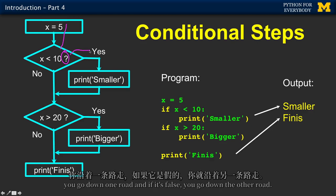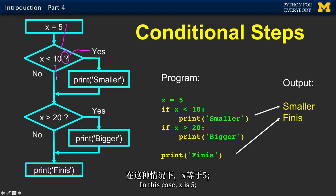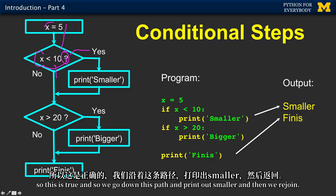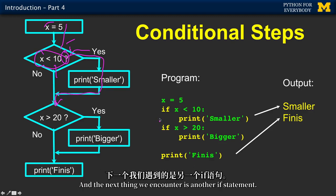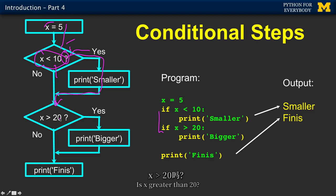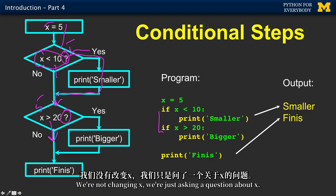You start with x equals 5, then you hit the if statement, and the if statement is asking a question. If the question is true, you go down one road, and if it's false, you go down the other road. In this case, x is 5, so this is true, and we go down this path and print out smaller, and then we rejoin. The next thing we encounter is another if statement. Is x greater than 20? Well, in that case, it's no, because x is 5.